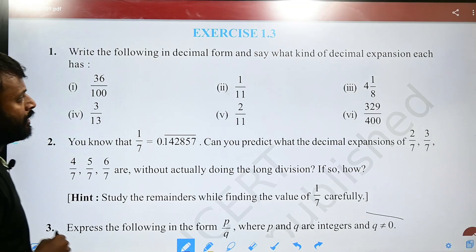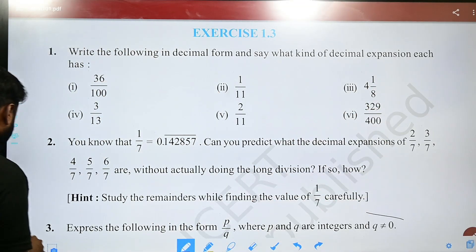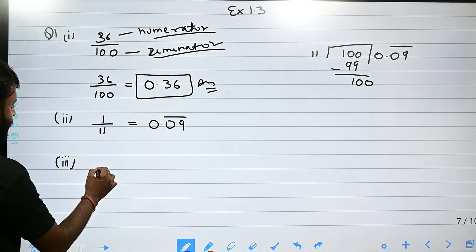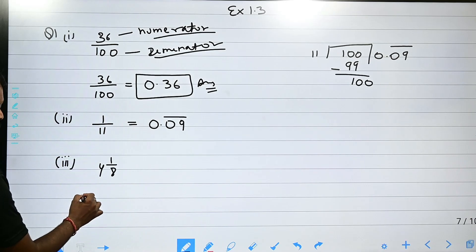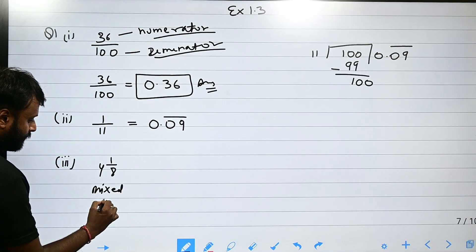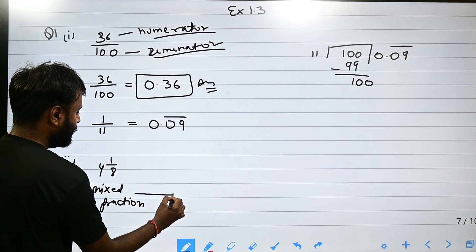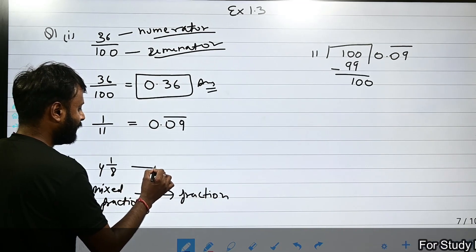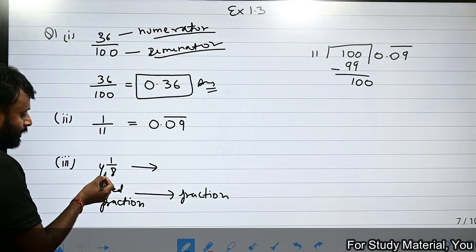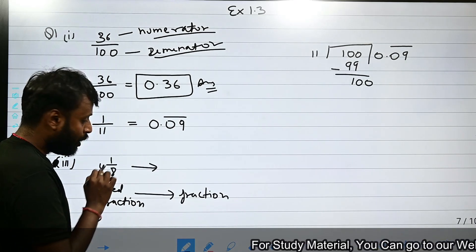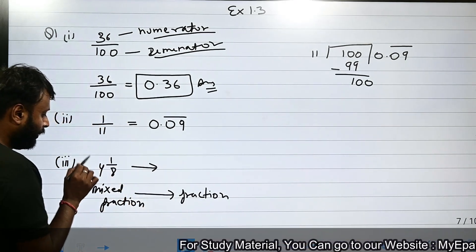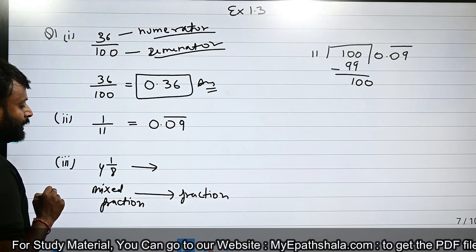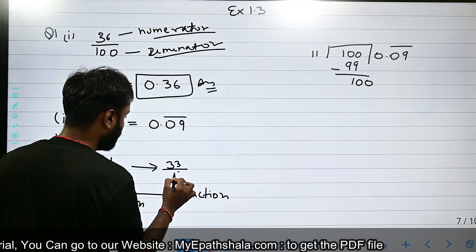The third part is a mixed fraction, 4 1 by 8. First of all, we will change the mixed fraction into an improper fraction. We multiply the denominator with the whole number: 8 times 4 is 32, then we add the numerator. So it will be 33 upon 8.